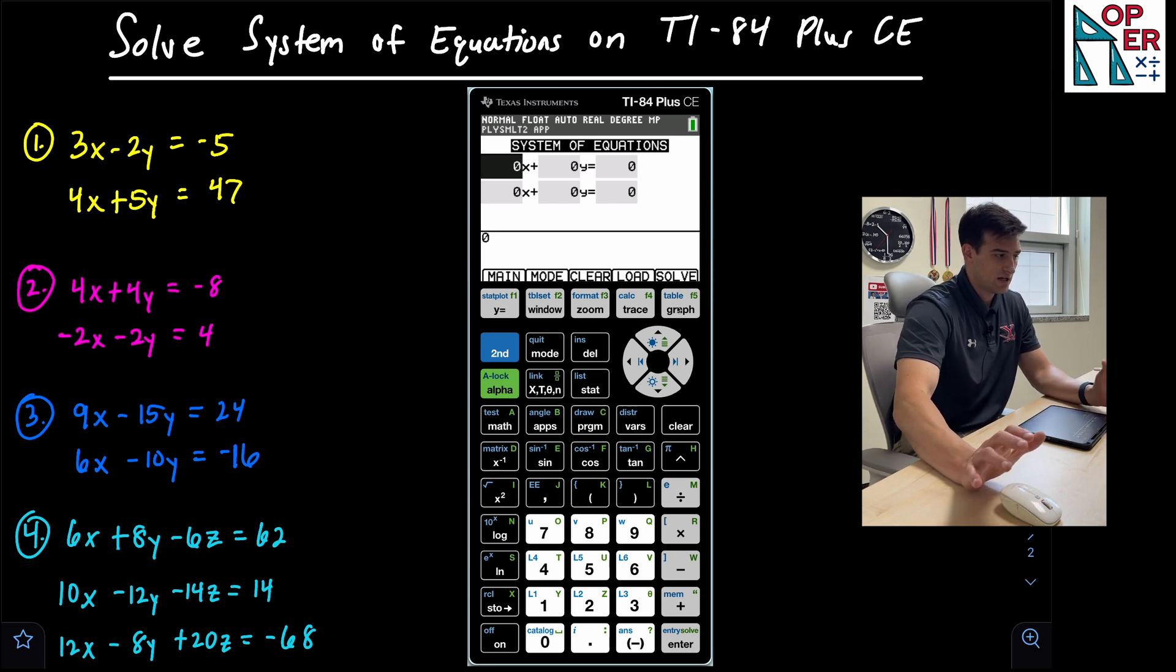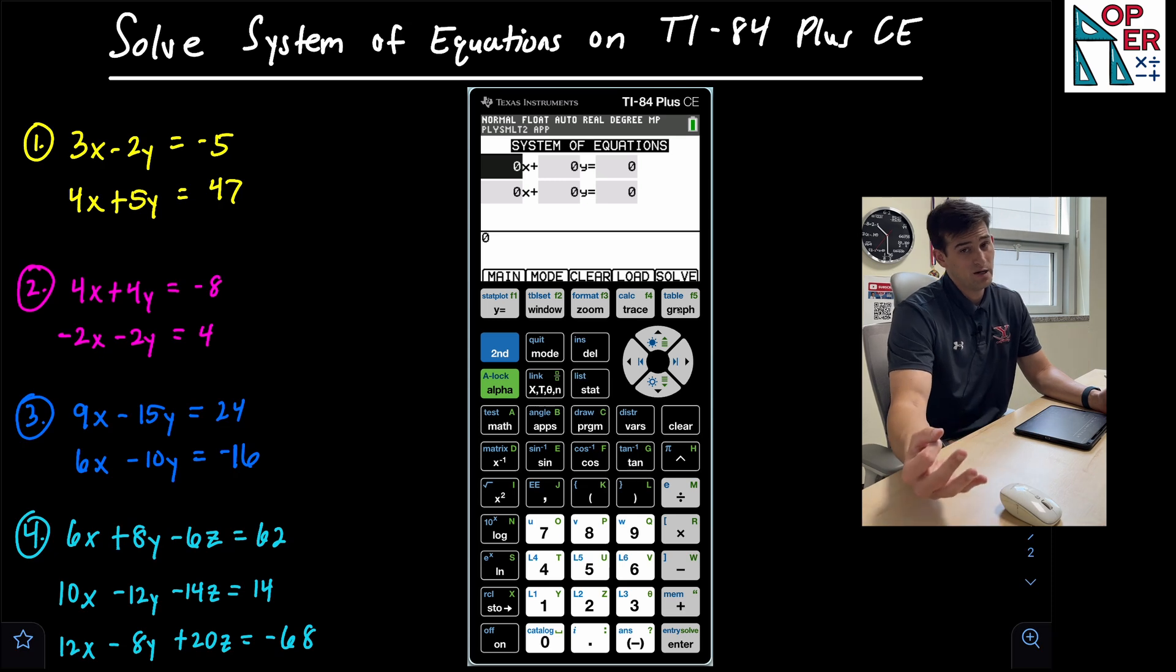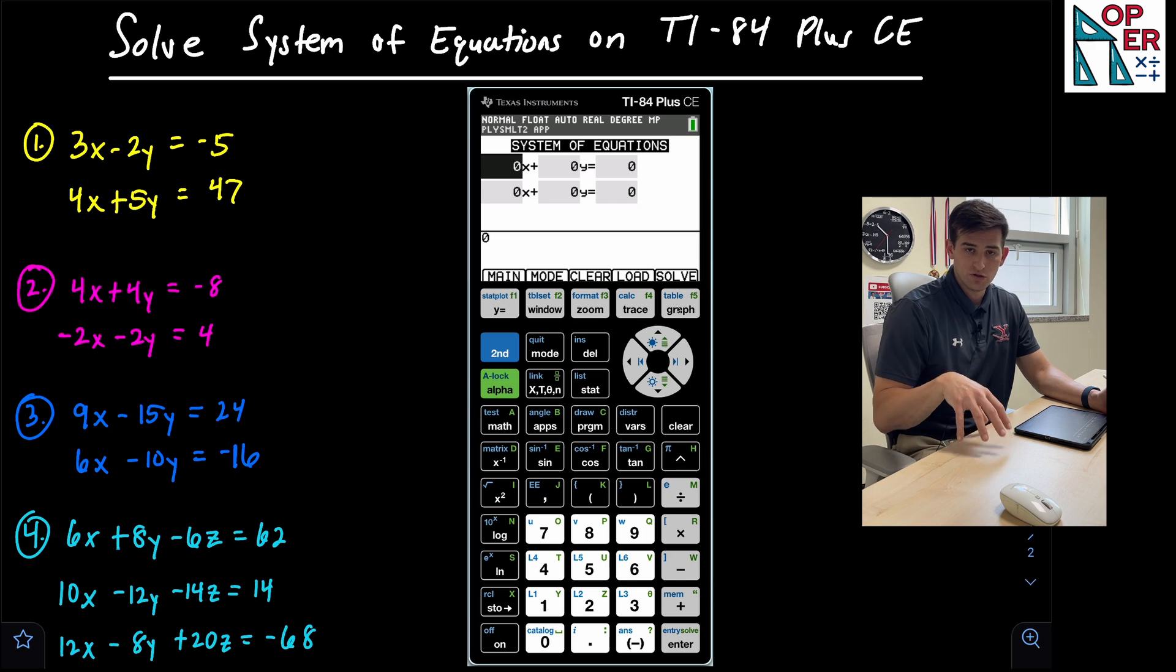Now it brings up our two equations and it's just kind of like a blank template that we can fill in. The reason why I have three examples here is because when we're solving a system, we could have one solution, we could have no solution, or we could have infinitely many.